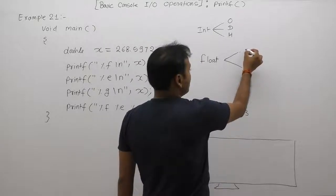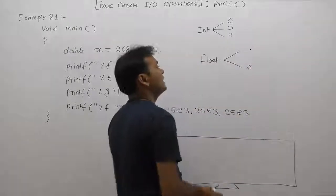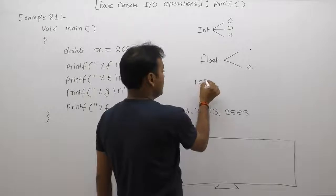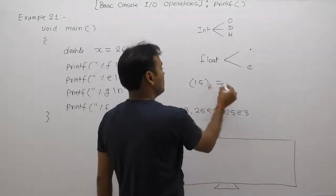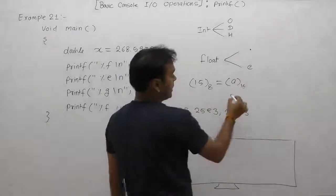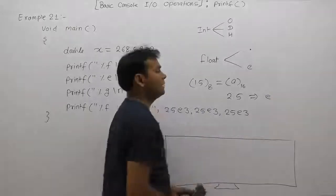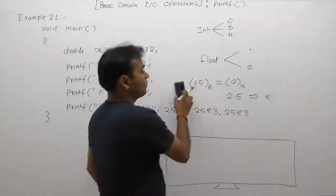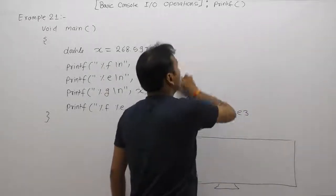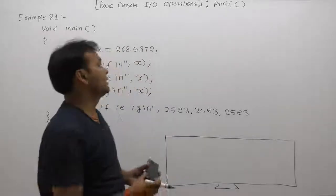Those two representations are: decimal point representation and exponent (scientific) representation. For example, a value like 15 in base 10 is equivalent to a value in base 16 — there is no difference. Similarly, a value like 2.5 can be written in exponent form as well, without changing its meaning. We'll look at how to convert between decimal representation and exponent representation.